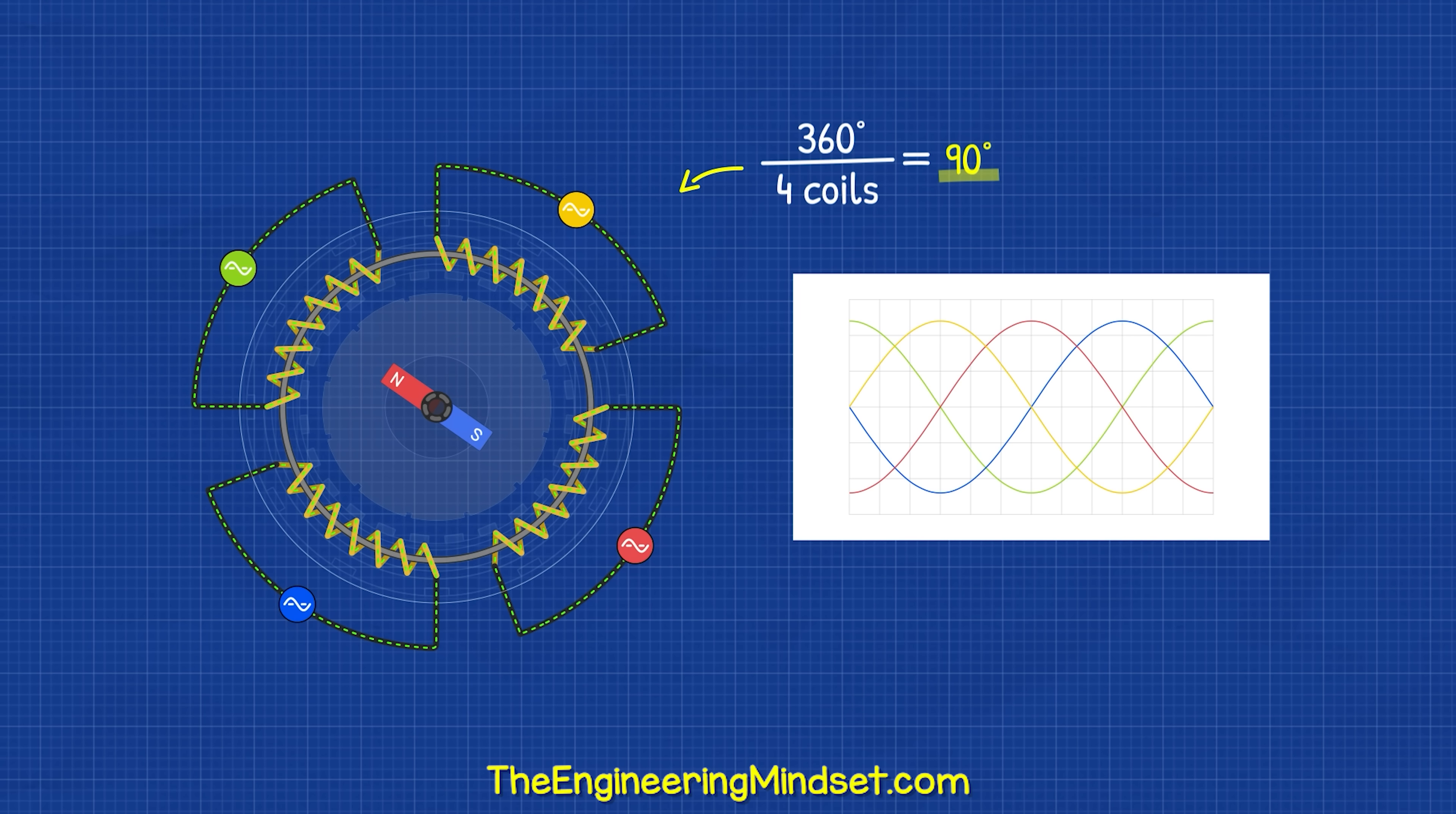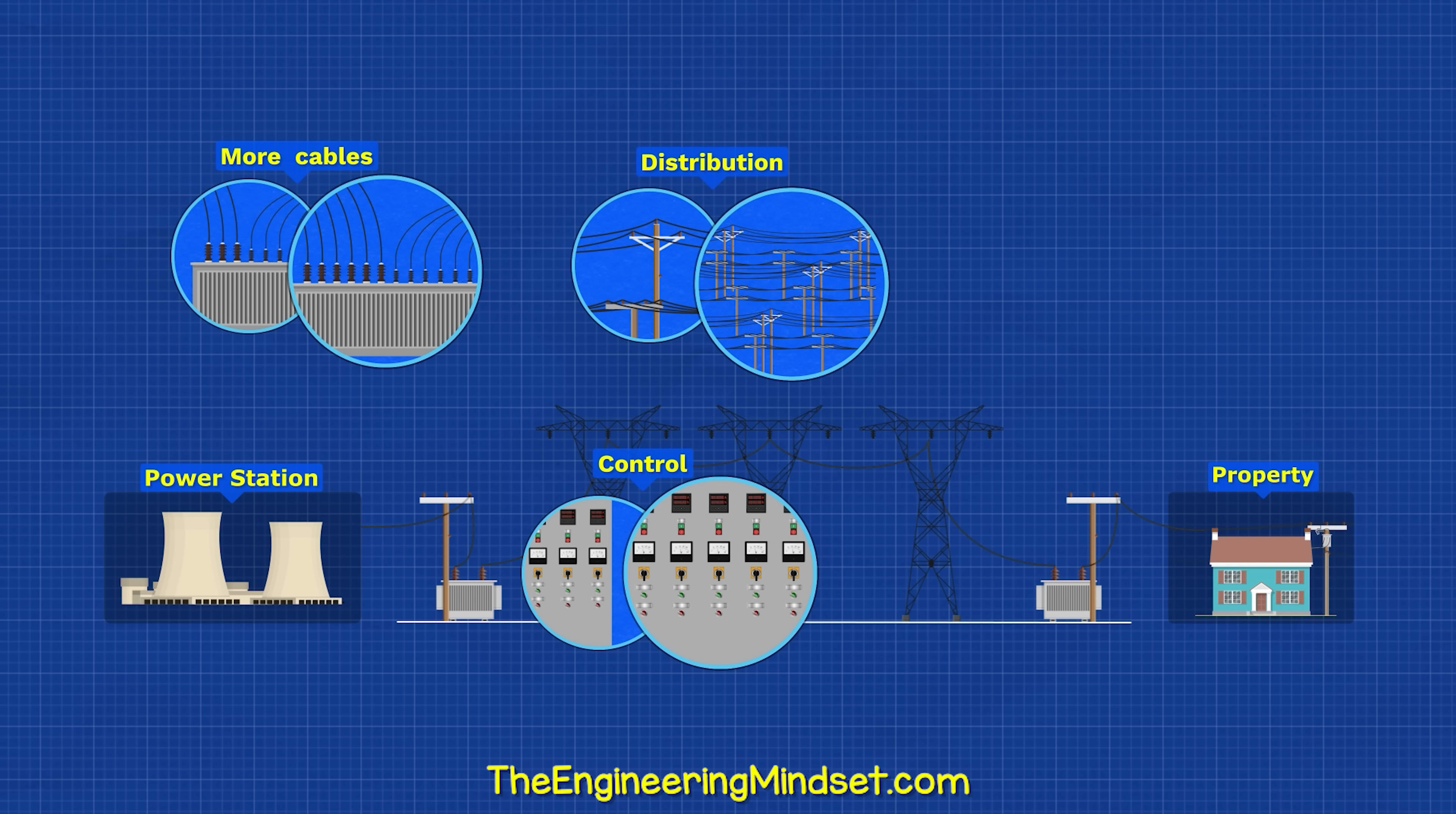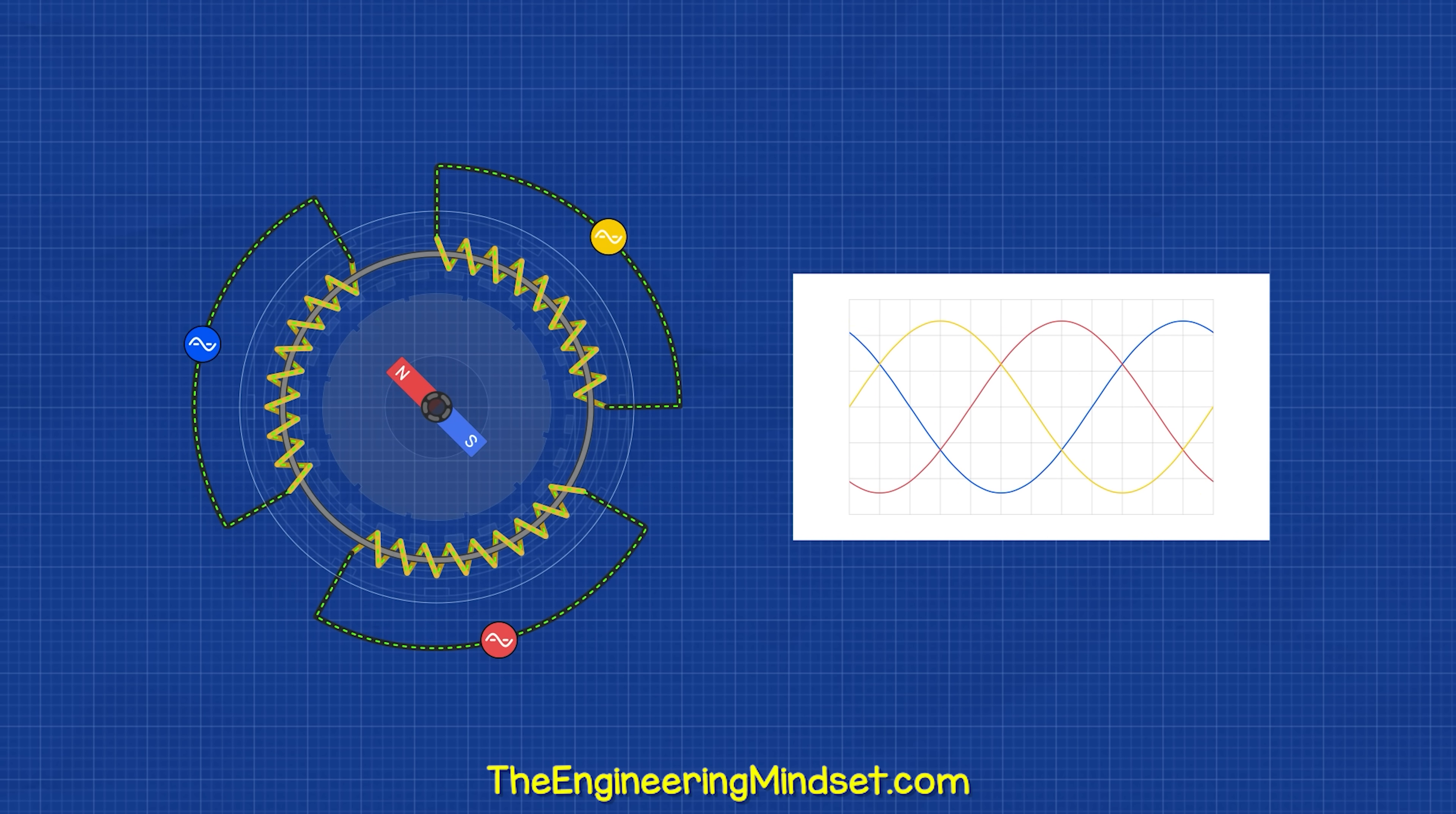We could add a fourth phase, a fifth phase or a sixth phase, but the generator becomes more and more complex and expensive. We would also need more cables, more control and protection equipment, complex transmission and distribution infrastructure, more complex transformers and motors. It's harder to balance the electrical network, and it's very hard to synchronize generators to work together. So we instead settled on three phase for generators and equipment.